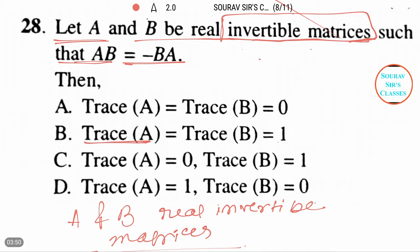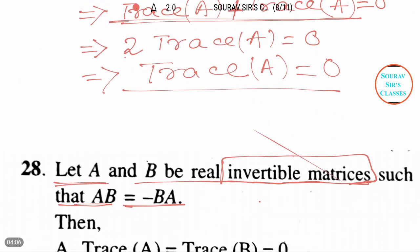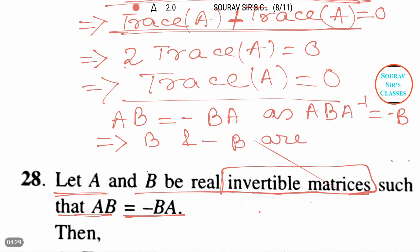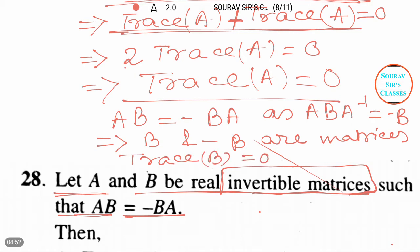Looking at the options: option B says trace(A) equals trace(B) equals one — that is incorrect. Option D says trace(A) equals one and trace(B) equals zero — also incorrect. We can also write AB equals one and trace(B) as B A inverse equals minus B, so B and minus B are similar matrices, just as A and minus A are similar matrices.